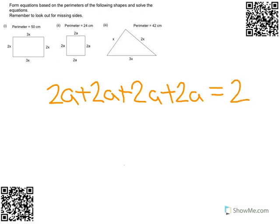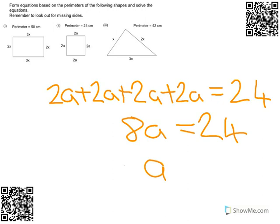So those four sides added together equal 24. So you've got 8a equals 24. We've formed the equation. Solve it. Divide both sides by 8 and you get a equals 3. So that's 3cm.